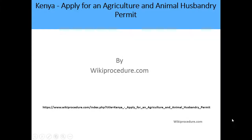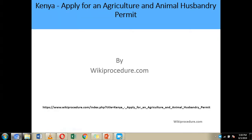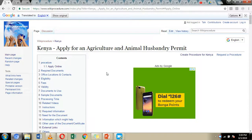Hello, welcome to another wiki procedure. Today we are going to look at how you can apply for an agricultural and animal husbandry permit in Kenya. Below we have given you a link which is going to direct you to our wiki procedure website page where we have given you more detailed information on how you can go about the application process.